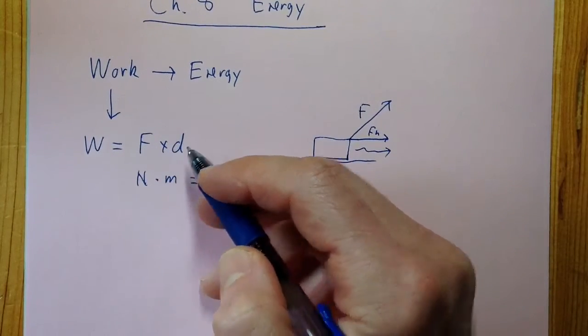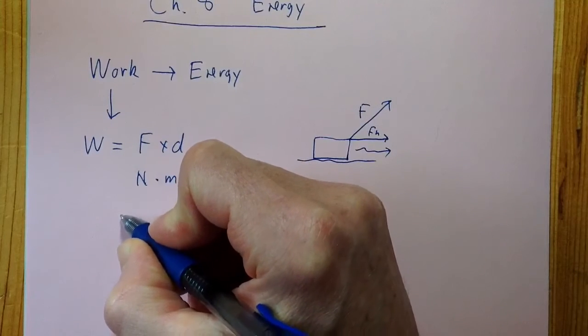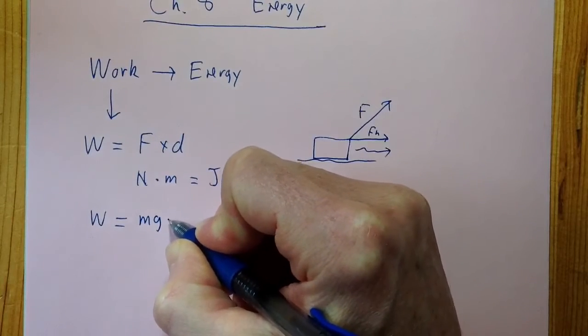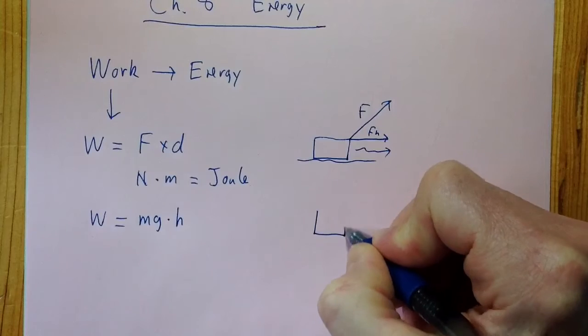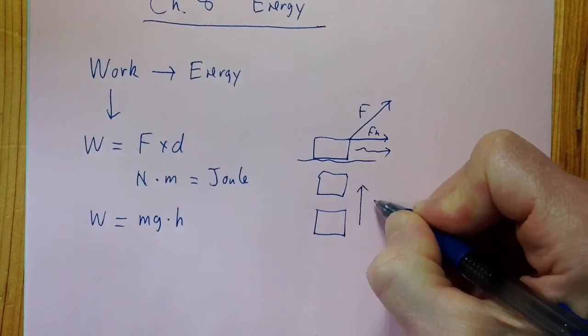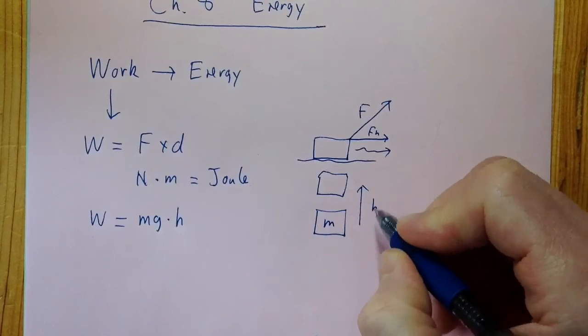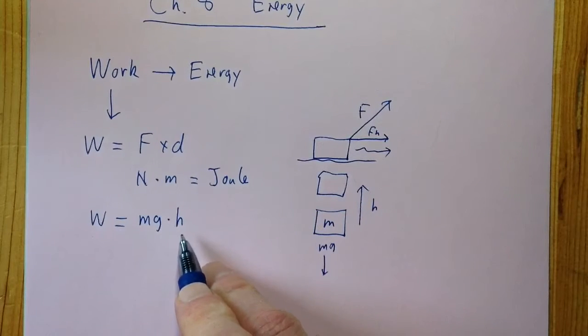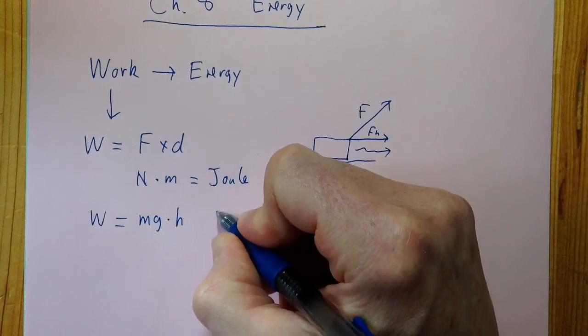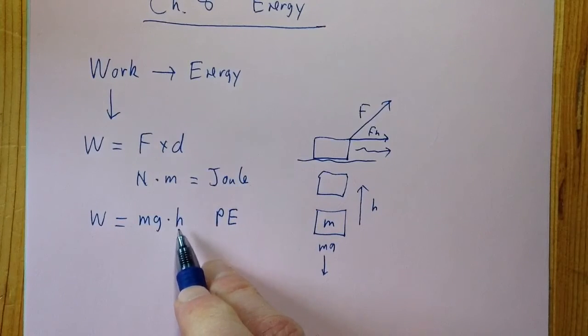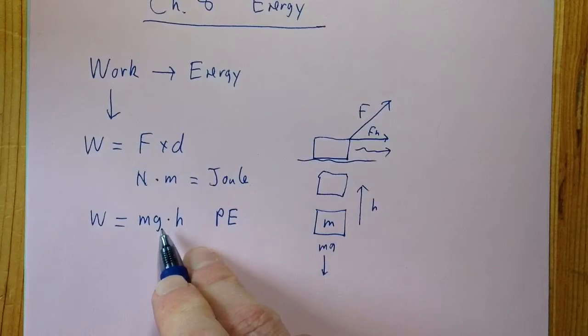So if you do work to lift something straight up, then to lift something straight up, the force is gravity, which is mg, and the distance you move it is like the height. In other words, you're lifting something up from here to here, and so you lift it up a certain height h, and it's got a certain mass, and it's in gravity, so gravity is pulling downwards. So the work you do is mgh, and that is what's called the potential energy. The potential energy is the energy it has because it's up higher.